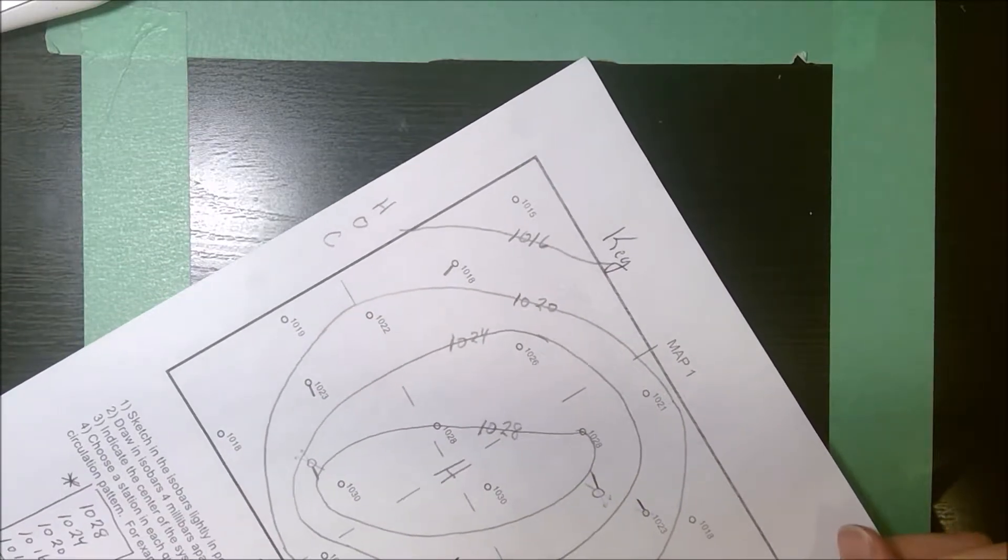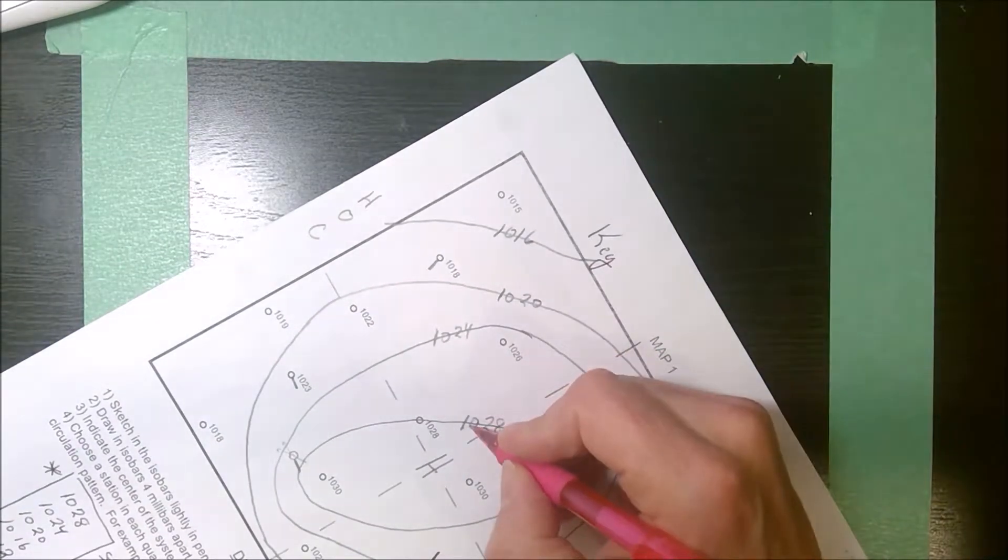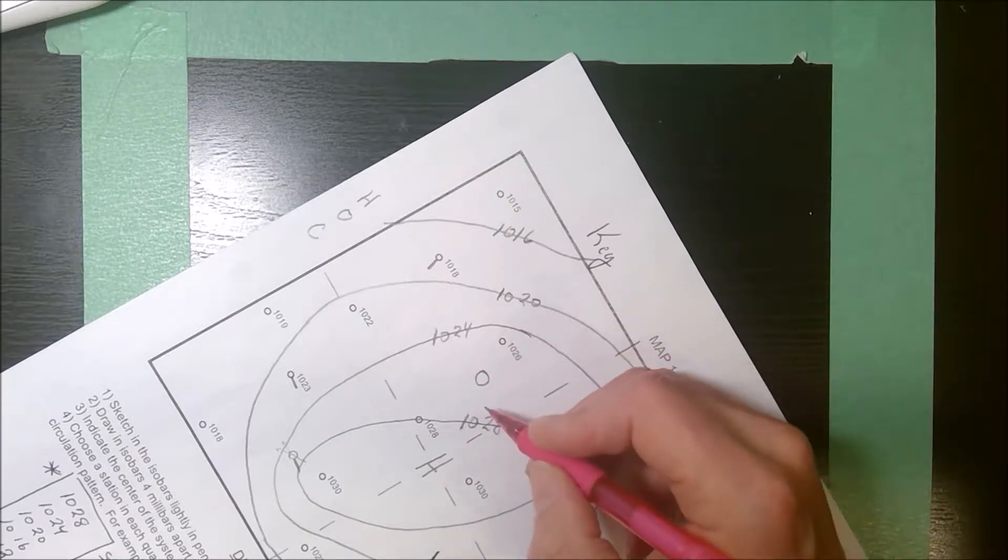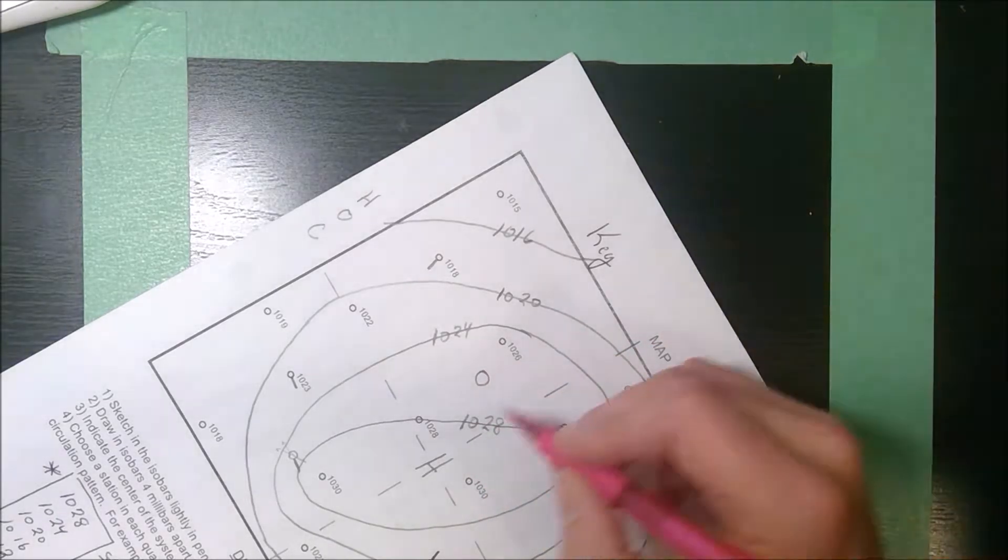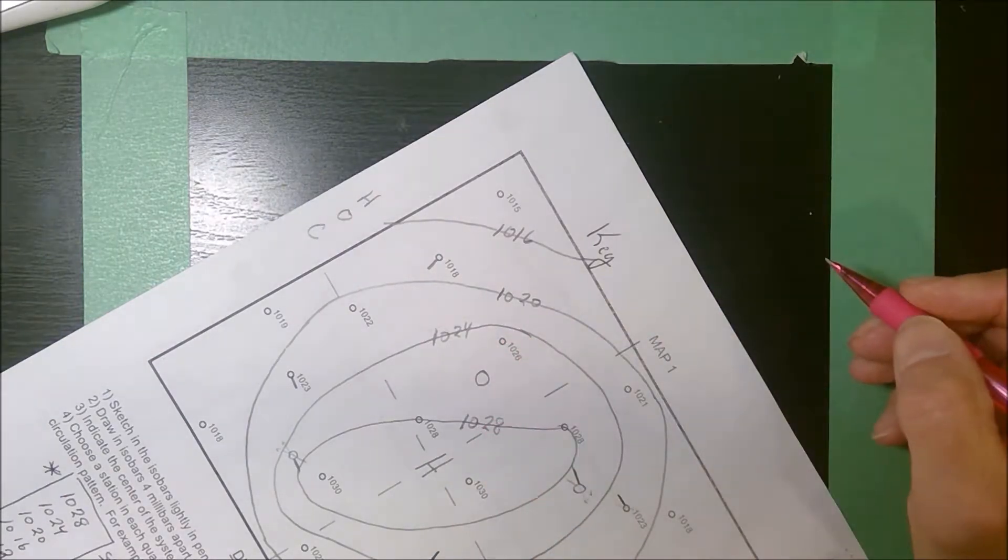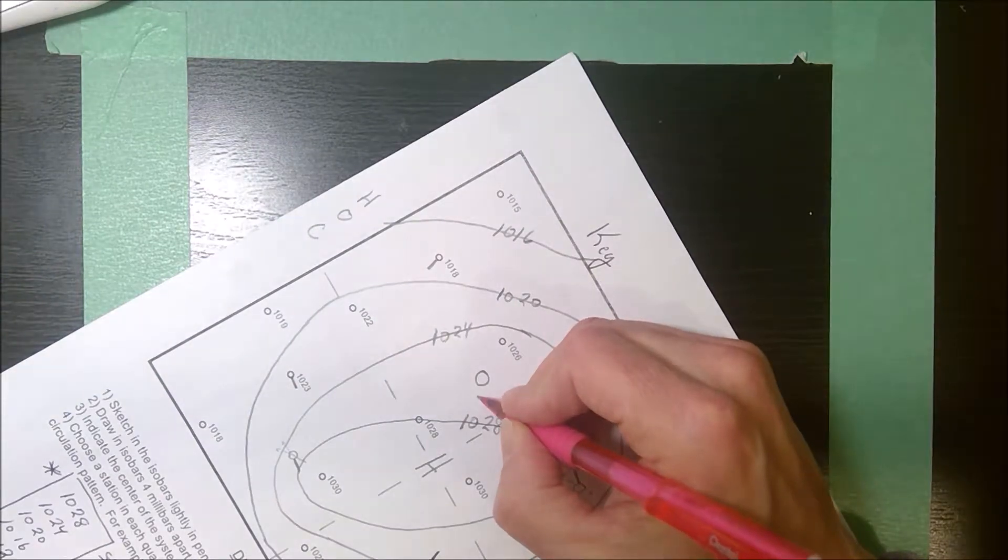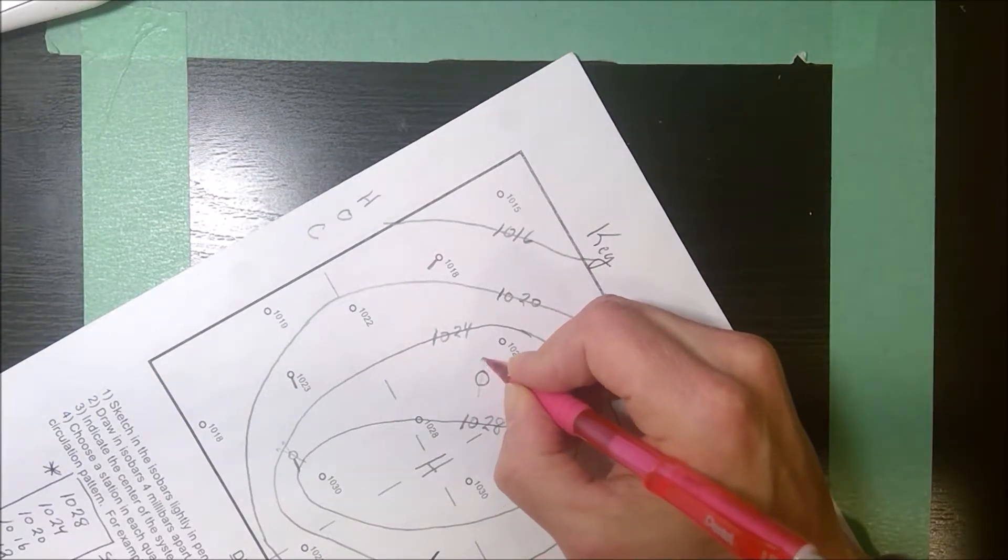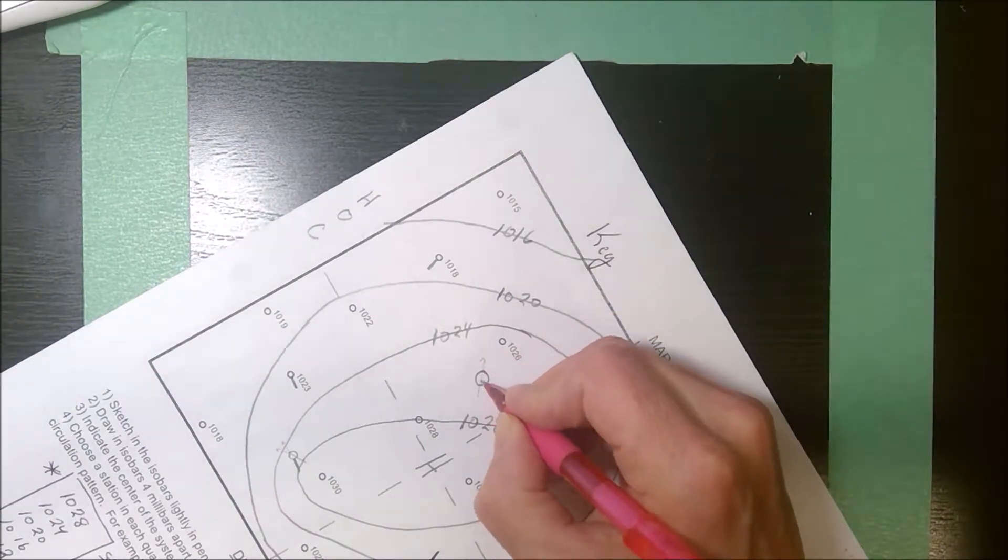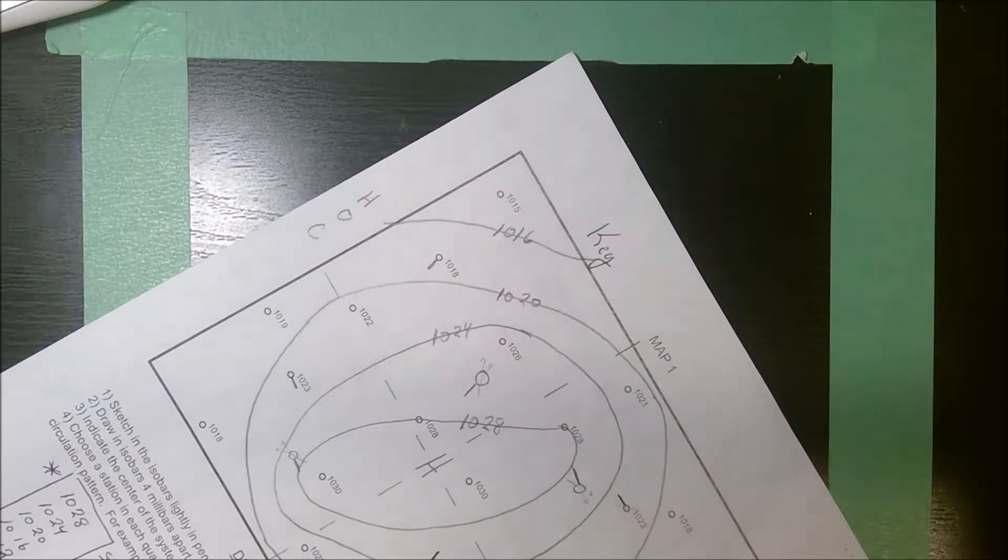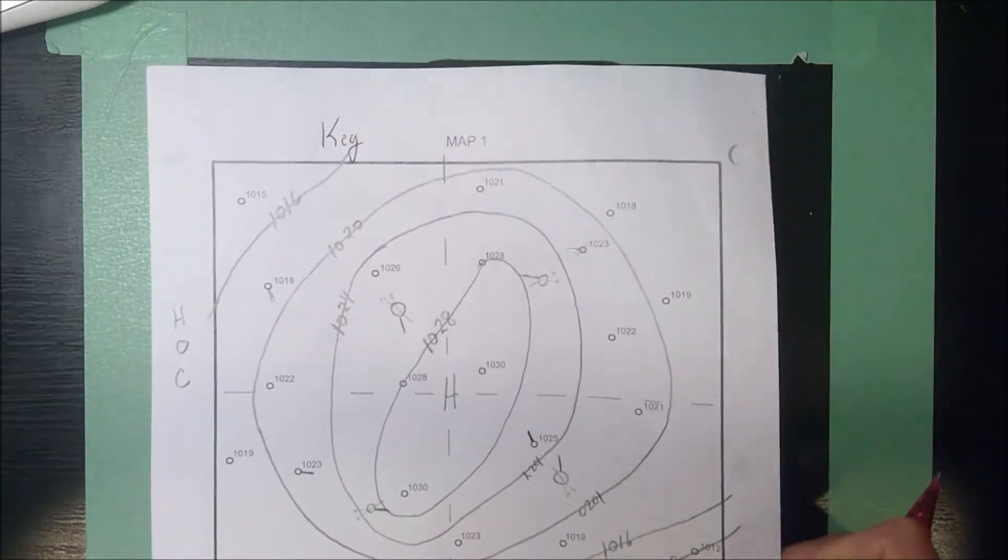When I turn to this quadrant, we have 1028 to 1024. Here the isobars are farther apart. We're going to learn that you put feathers on the wind shaft to show the wind speed. Here the isobars are farther apart. It would be a lower wind speed, but the pressure gradient force would be going from high to low. The Coriolis force would be deflecting it to the right. So here the winds would be going out and clockwise.